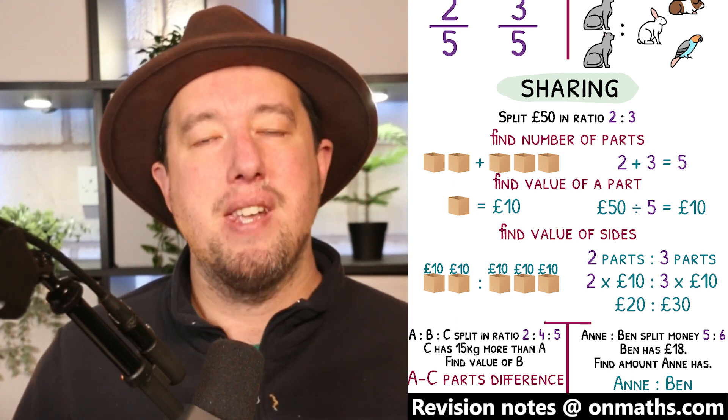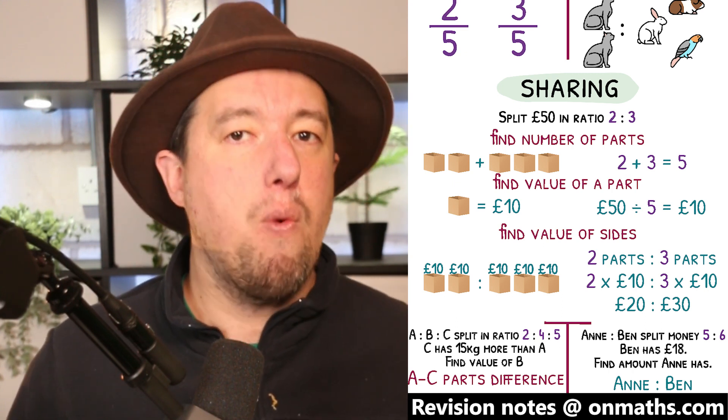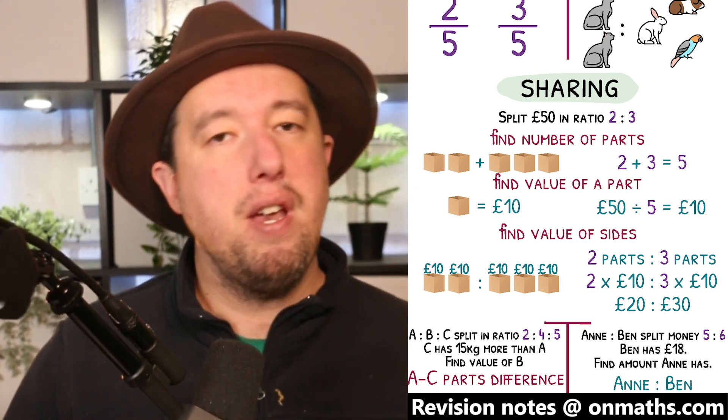so 2 times £10 is £20. On the right, we have 3 boxes, which will be 3 times £10, £30.